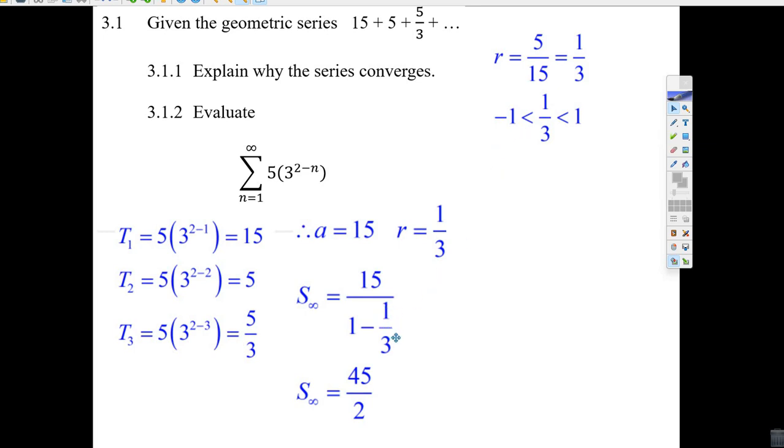And the formula for an infinite series is A over 1 minus R. And R, as long as R is a fraction in between 1 and minus 1, it works. So you get your calculator, you go 15 over 1 minus 1 third, that's 2 thirds, you tip in times, the answer is going to be 22 and a half, or 45 over 2.